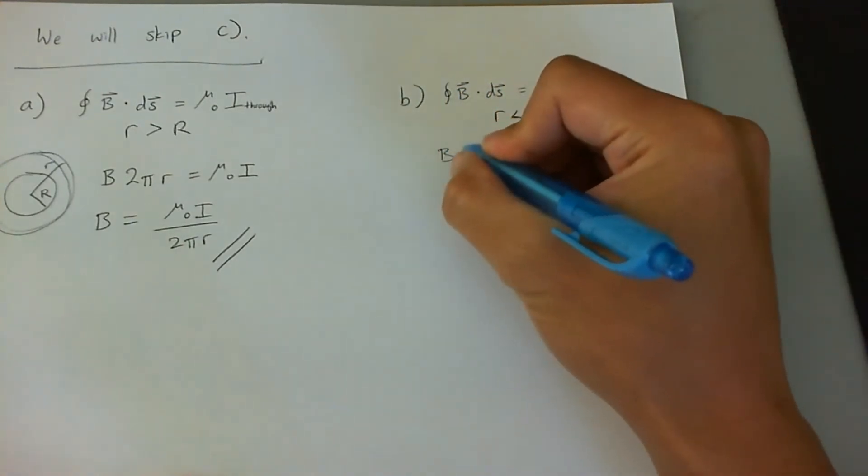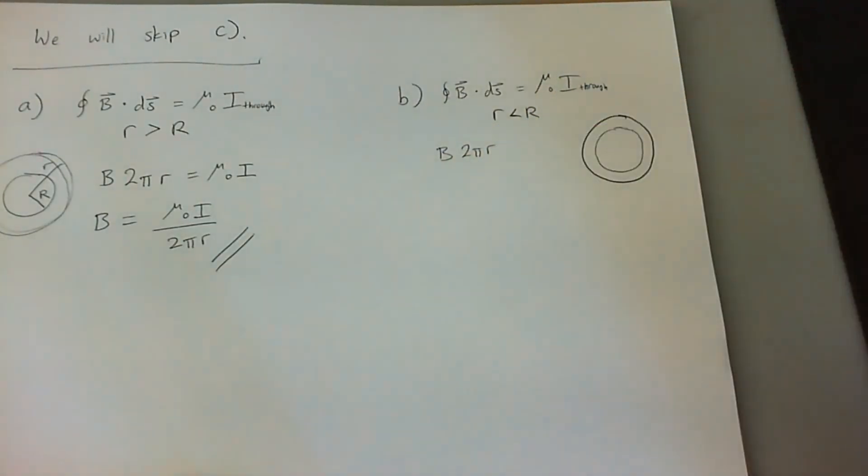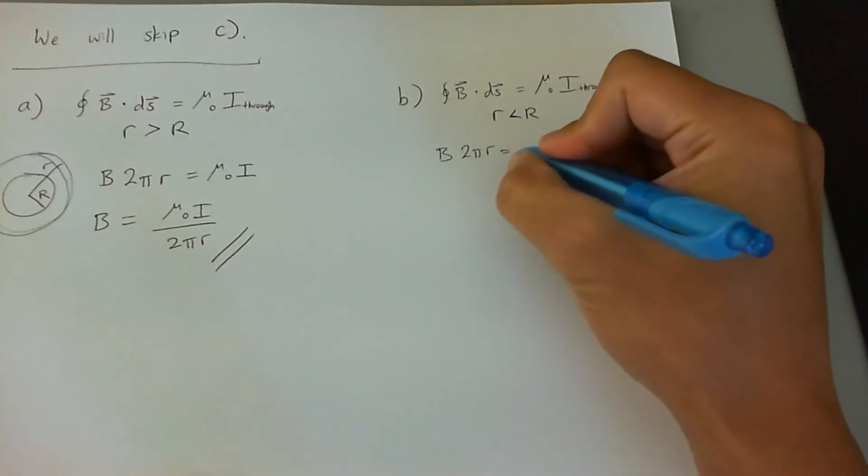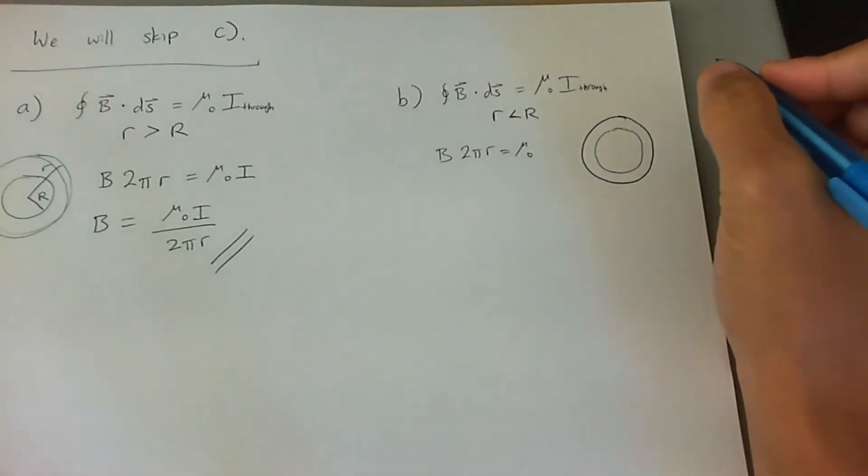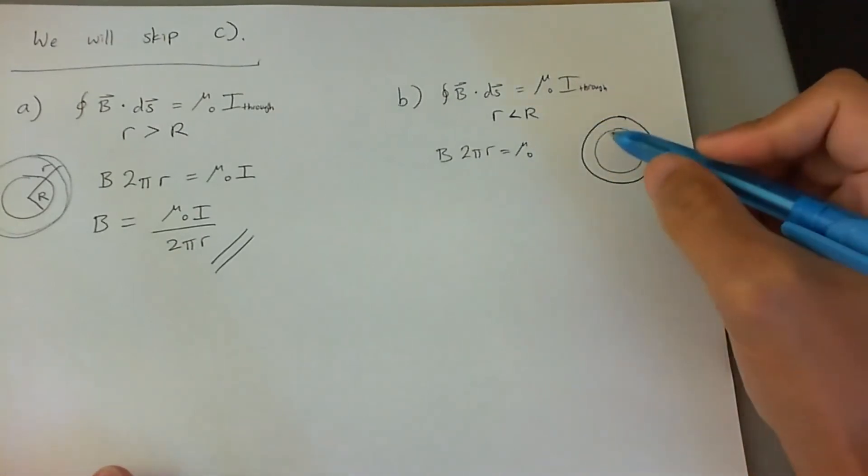And we're going to go ahead and say B times 2 pi r, where r is less than big R, and that's going to equal to mu naught, and here's the tricky part. We have i, but it's going to be a fraction of an i.